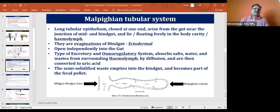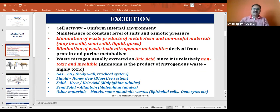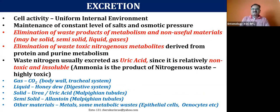Looking at the picture, a few important points: the internal environment of the cell should be maintained because the cell is extremely busy. Various ions and metabolic wastes are sent out of the cell to maintain a constant level of salt and osmotic pressure. These metabolic wastes can be solid, semi-solid, liquid, or gases. Finally, the elimination of waste toxic nitrogenous metabolites derived from protein and purine metabolism is extremely important compared to other things.